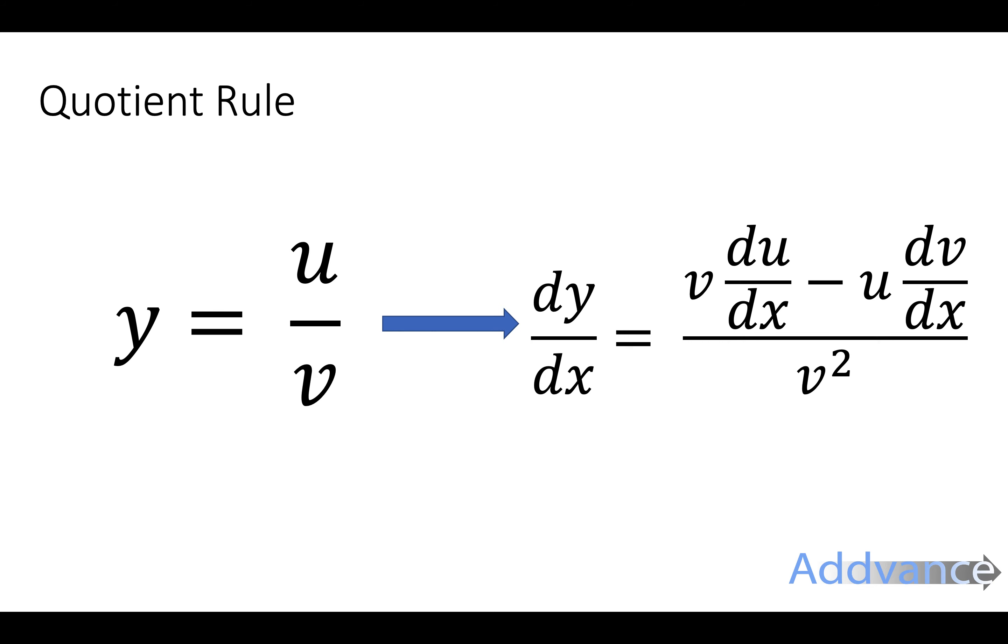It looks like that and I really want you to pay attention to the order here. The order is really important. It's v du minus u dv. So there's a minus and it really matters which way around the v du and the u dv are. The v du will be positive, the u dv will be negative. So be careful and that is probably the most common mistake with the quotient rule.